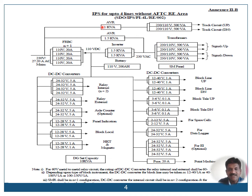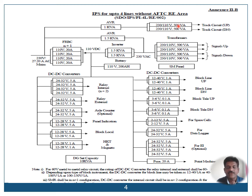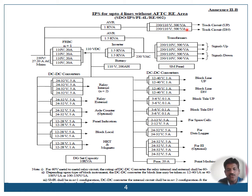Coming to the tracks: AVR tracks input is 230V and output is also 230V. This 230V is given as input to two step-down transformers — one used for track circuits in the up direction to feed all track feed charges, and the second one used to feed track feed charges in the down direction.